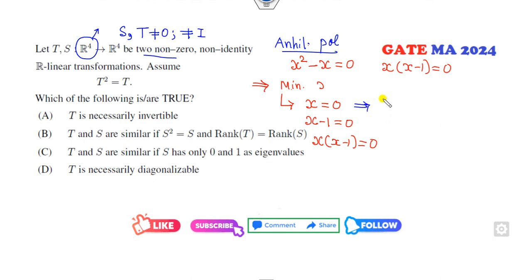The minimal polynomial is either X equals 0, or X minus 1 equals 0, or X times X minus 1 equals 0. But it is given that they are non-zero and non-identity, so the minimal polynomial of matrix T is X times X minus 1. This is the minimal polynomial.